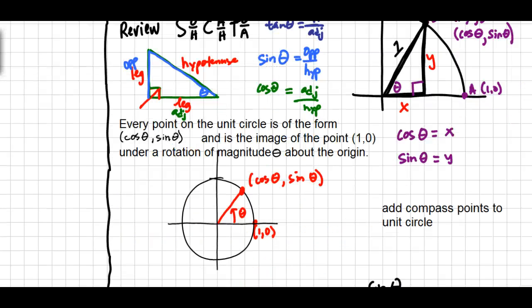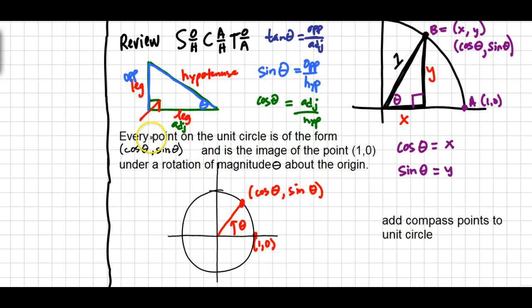So the book describes it this way. Every point on the unit circle is of the form cosine theta comma sine theta, and those coordinates are the image of the point 1, 0, because we always start at the point 1, 0. Then we rotate it a certain amount, which we call magnitude theta, and we rotate it about the origin.